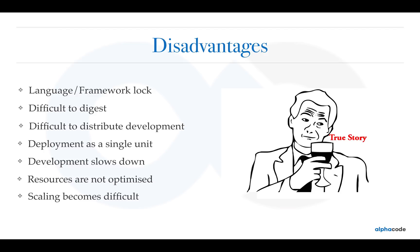To summarize: you have a successful, business-critical application that has grown into a monstrous monolith that very few developers understand, written in obsolete technology that makes hiring talented developers very difficult. The application is difficult to scale and unreliable, customers are frustrated, and operations management is always struggling to find the owner of a particular module whenever something breaks — it's really difficult to pinpoint which module is taking the hit.